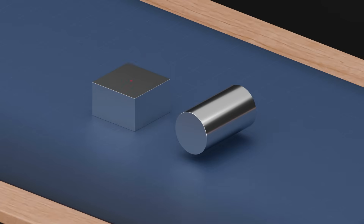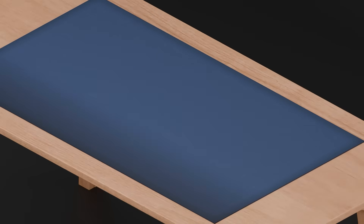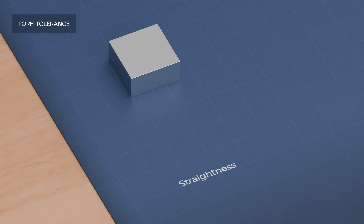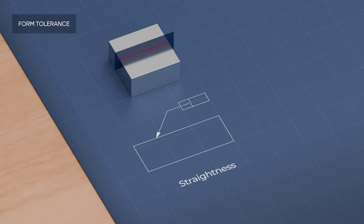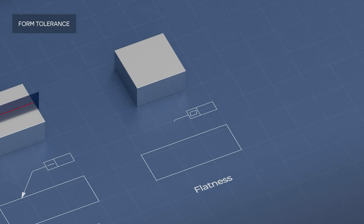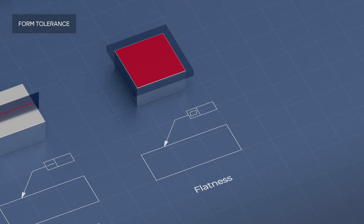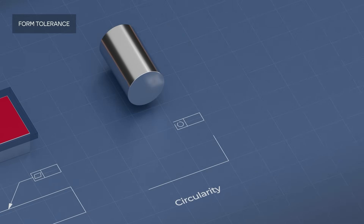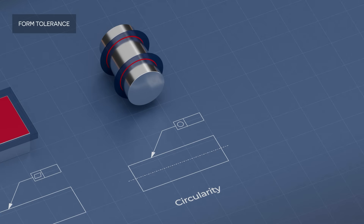Let's zoom in to each tolerance. Straightness: the tolerated line should lie between two parallel lines, and the distance between these two lines is the tolerance value. Flatness: the tolerated surface should lie between two parallel surfaces, with the distance between them being the tolerance value. Circularity: the tolerated circle should lie between two theoretical circles, with the distance between them being the tolerance value.